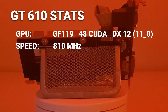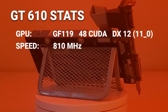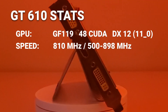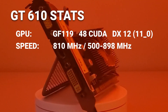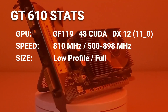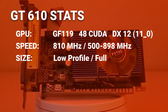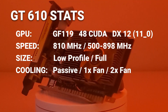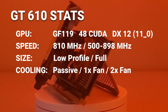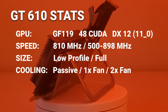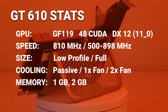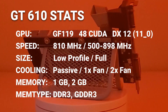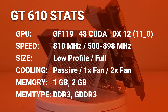The card runs at 810MHz core clock and between 500 and 898MHz memory clock. The card comes in both low-profile and full-height versions, featuring passive, single-fan, and dual-fan cooling solutions. The GT610 comes with either 1GB or 2GB of DDR3 or GDDR3 memory.